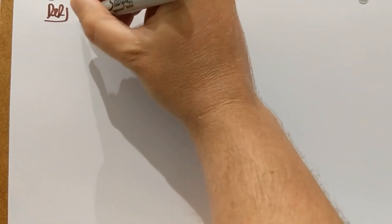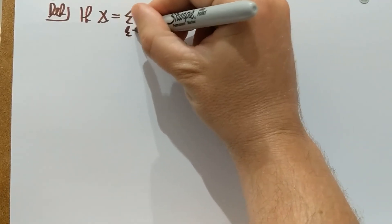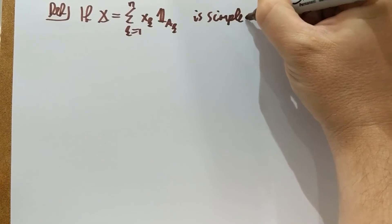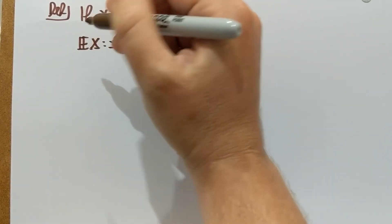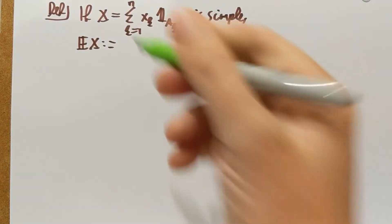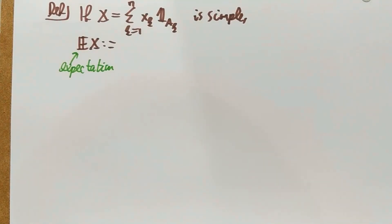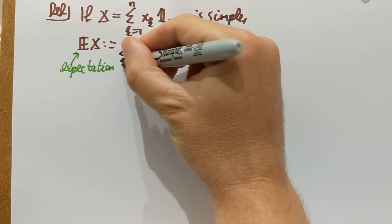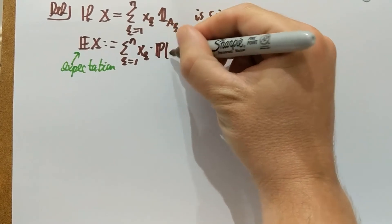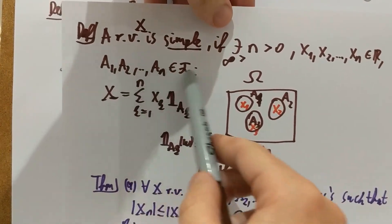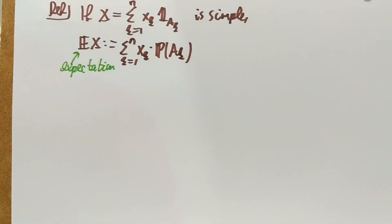The first one is when you have a simple random variable. If x is given by a finite sum of xk values times indicator of ak, so it's simple, then it's very easy to define its expectation. The expectation of x — or expected value — is defined as the sum of the xk values times the probability of the events ak. This makes sense because the ak's belong to the sigma algebra F, so it makes sense to talk about their probabilities. That was step one.